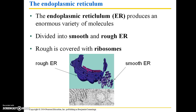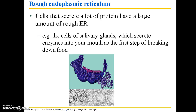The endoplasmic reticulum, sometimes abbreviated ER, produces an enormous variety of molecules. It is divided into two categories: smooth ER and rough ER. Rough ER is called rough because it is studded with ribosomes, making it look granular in comparison with smooth ER. Cells that secrete a lot of protein need a large amount of rough ER — for example, your salivary glands secrete enzymes into your mouth as the first step in breaking down food, so the cells within those salivary glands contain a lot of rough ER.